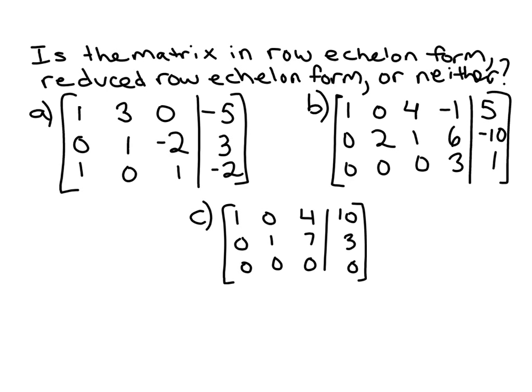If it's in row echelon form, the key thing is that those pivots fall diagonally down from the top left to the bottom right. You've got this nice diagonal of ones here, but what messes things up in matrix A is this non-zero entry right here in the first column. The pivots, the first non-zero entries in each row, must move down and to the right.